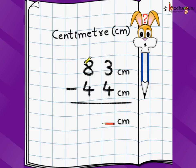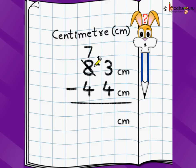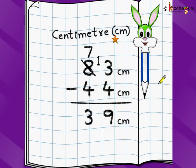3 tells its neighbor 8: can you give me a 1? 8 says: sure, I can give you a 1, but then I will be reduced by 1. So 8 becomes 7, and the 1 is lent to 3. So 3 becomes 13. Now we can easily do 13 minus 4 because 13 is greater than 4. Previously it was just 3, that's why we borrowed a 1, so it became 13. 13 minus 4 is 9. Now we come here: 7 minus 4 is 3. So 83 centimeter minus 44 centimeter is equal to 39 centimeter.